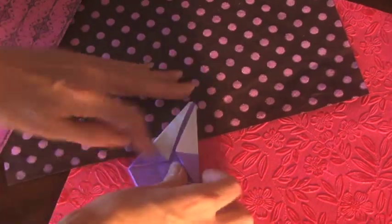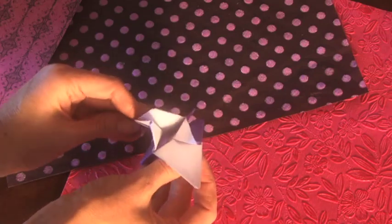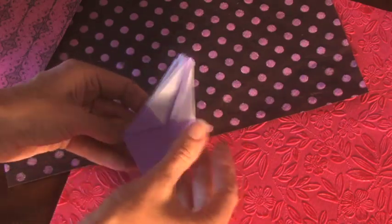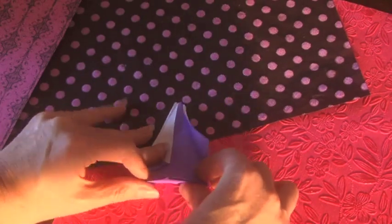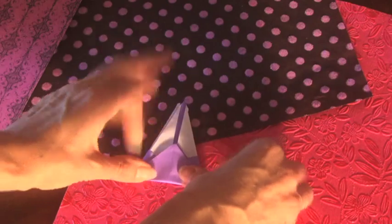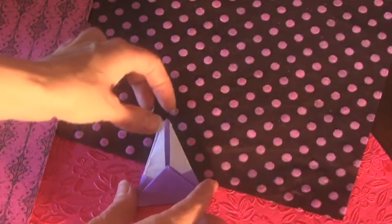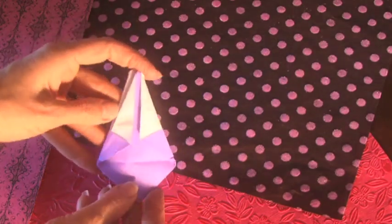So now what you're going to have, the reason you wanted the open part up top is you're going to have this is where your star box is going to open. Take the bottom, you want to fold it up. This will create the bottom of your box. Okay, right there. Okay, now it's time to open it. Very carefully put your fingers in the middle and push it down.